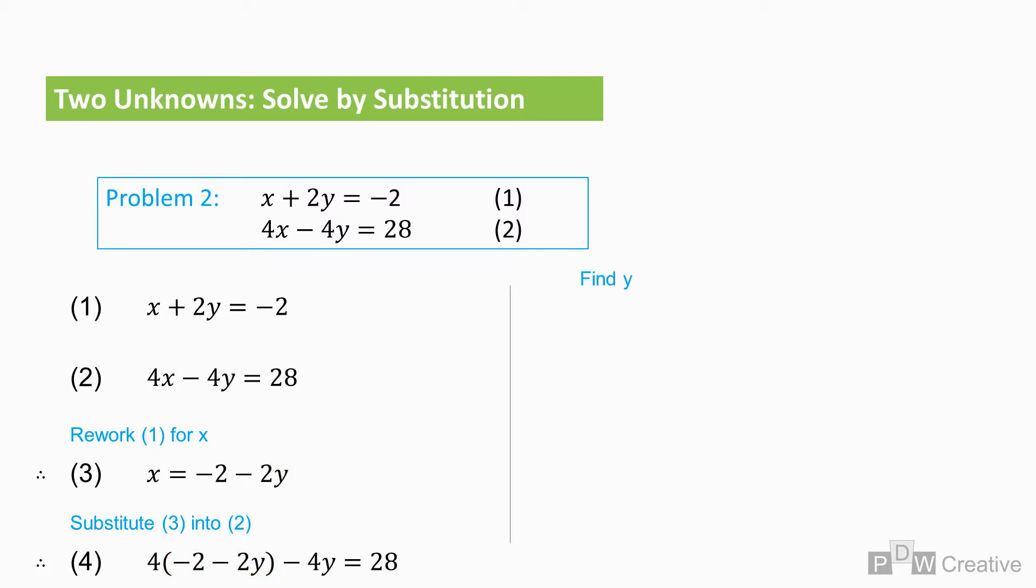Y can now be found. By taking equation four and expanding the brackets, minus 12y equals 36. Reworking for y gives y as minus three.